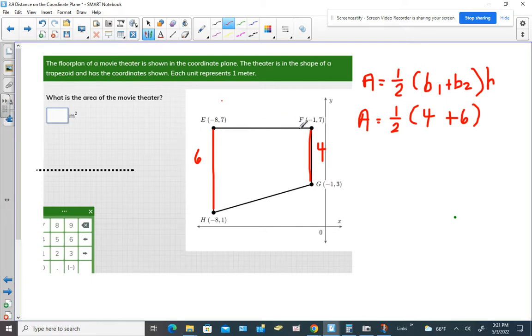So how far apart are these dots from each other? Well, notice that the 7s, the y coordinates are both 7s. They match. So we're going to look at the x coordinates.